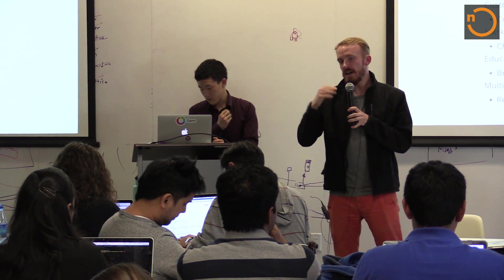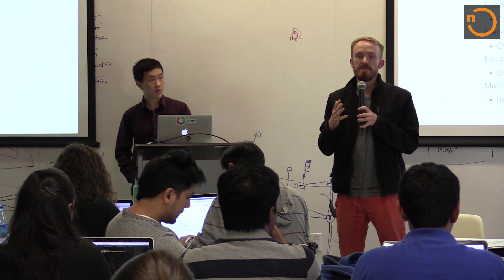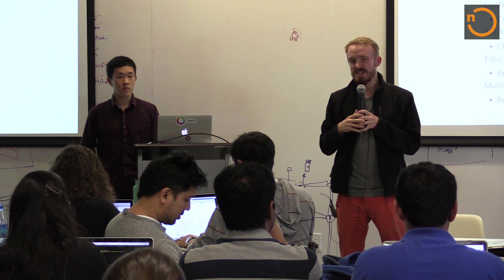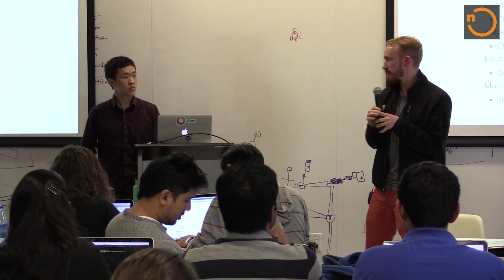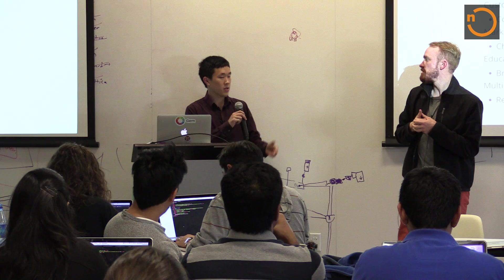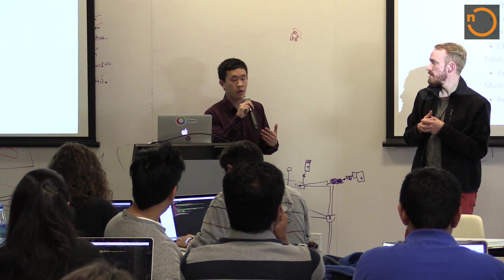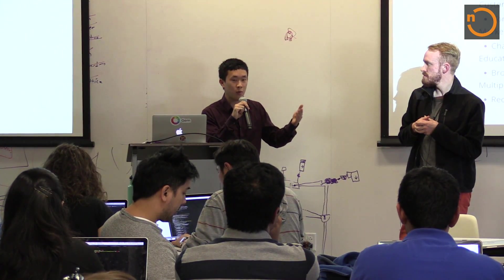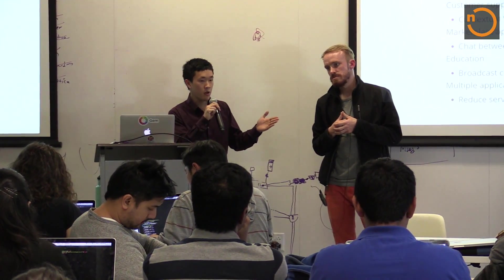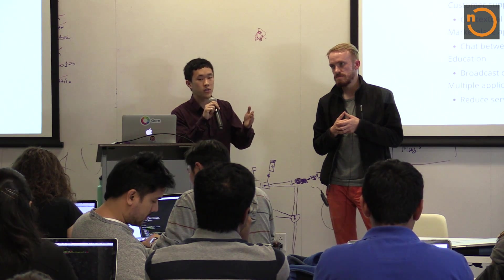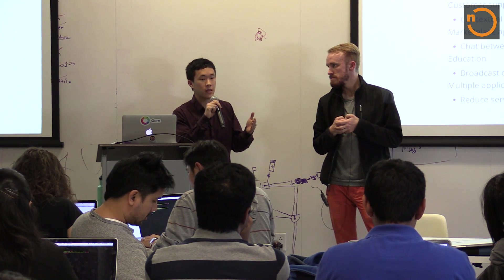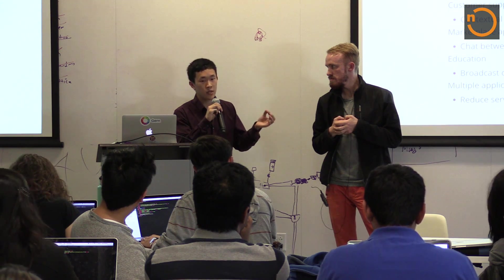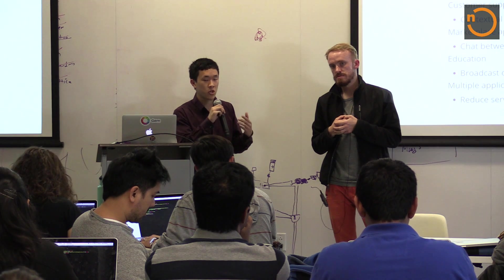On API key security: one fairly standard way is domain locking — on your account page you can lock your API key to a particular domain. You can also serve your API key from your back-end server so it's not visible in Chrome DevTools. And if someone does get your API key, there's a button to regenerate a new API key and generate new tokens.